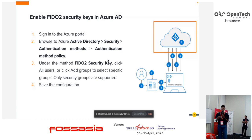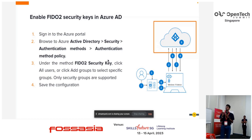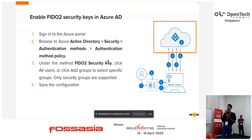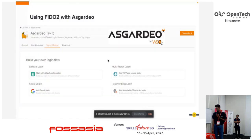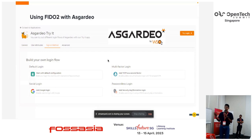Go to the Security section and under Authentication Methods, you can find the Authentication Methods Policy. Enable the method called 'FIDO2 Security Key,' then enable it for all users or specific groups. You can also set additional configurations there. At the software level, you can use WSO2 as an alternative — it also supports FIDO2 security keys — and there are many other options available.